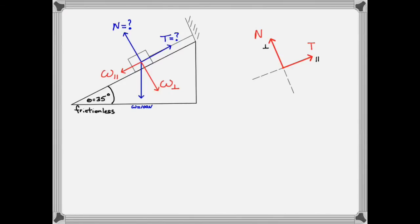As expected the two components establish a rectangle of which the weight vector is the resultant. A little geometry shows that this angle is the same as the angle of incline.